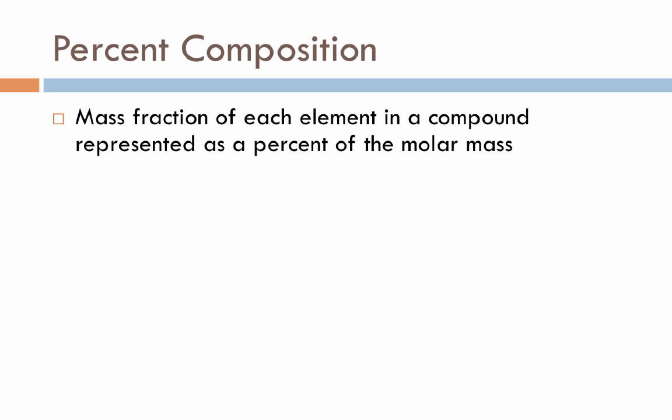We'll do a quick review of some of the older material. First of all, these types of calculations with empirical and molecular formula are basically the reverse of a percent composition calculation. If you recall, percent composition is the mass fraction of each individual element in a compound represented as a percentage of the molar mass or the total mass of the entire compound itself.